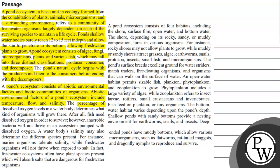The percentage of dissolved oxygen levels in a water body determines the kind of organisms that will grow there. Fish need dissolved oxygen in order to survive. However, anaerobic bacteria will not thrive in an ecosystem pumped with dissolved oxygen. A water body's salinity may determine the different species present.